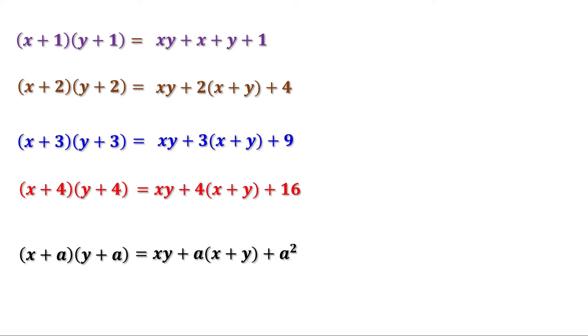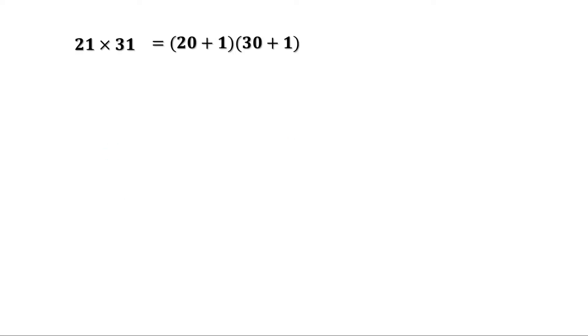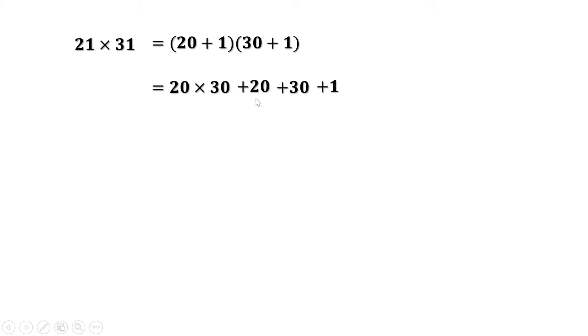There were three homeworks. Let us check the answers now. First: 21 into 31. This can be written as 20 plus 1 into 30 plus 1, which equals 20 into 30 plus 20 plus 30 plus 1. 20 into 30 is 600, plus 20 is 620, plus 30 is 650, plus 1 is 651.